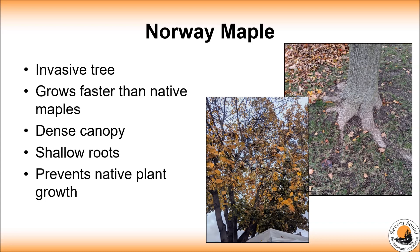It has become invasive by spreading from urban areas into natural areas where it outcompetes native maples and other trees. Norway maple grows and reproduces quicker than native maples. They produce a dense canopy creating a lot of shade, and once established, it blocks sunlight and its roots grow shallow, which can prevent native plant growth.